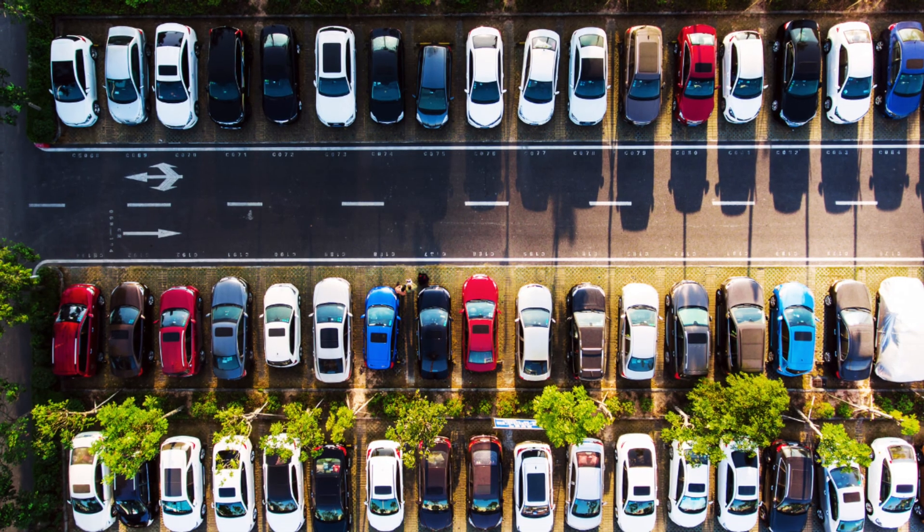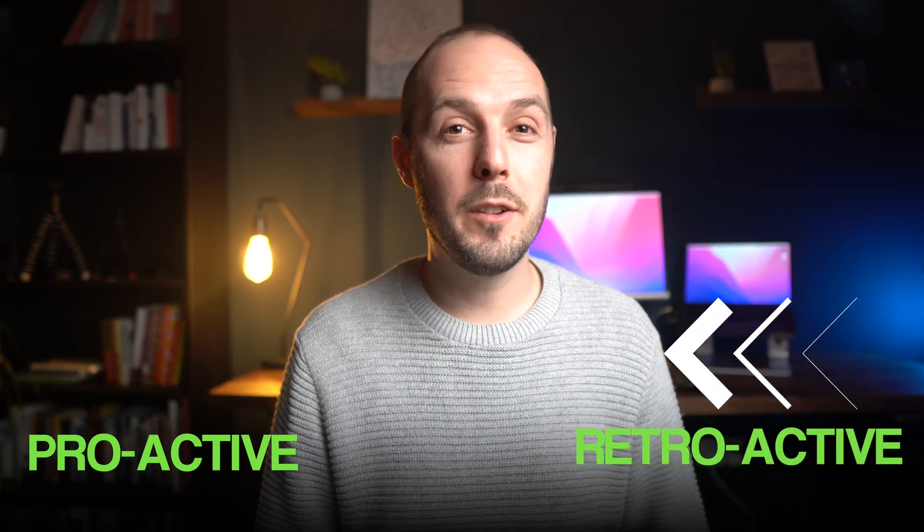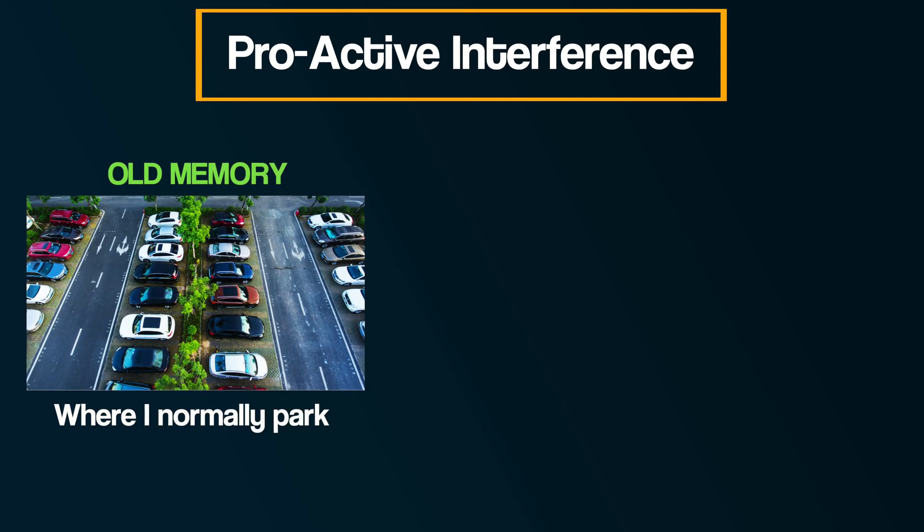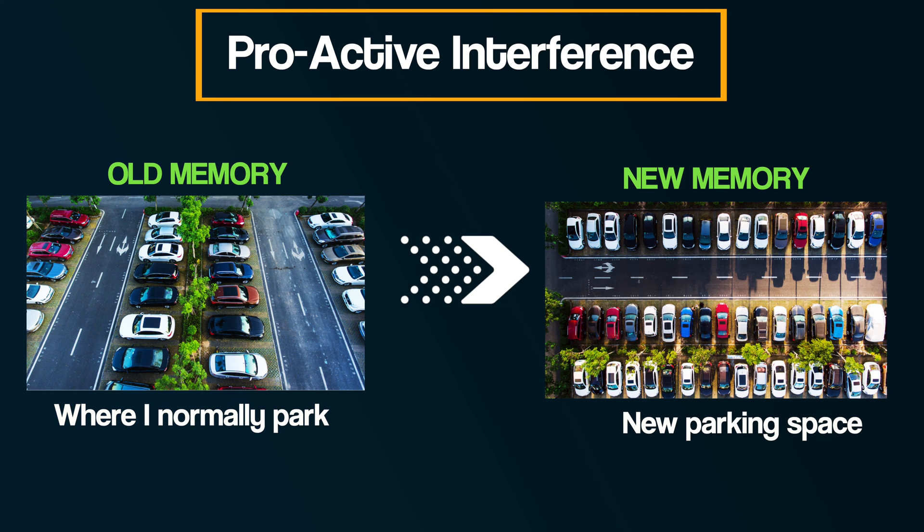For example, when I park my car at work, I tend to park in the same space or part of the car park each day. But one day I arrive and all the spaces in that part are taken, so I have to park further away and use a new space. However, at the end of the day when I go to look for my car, I can't find it — the thought even flashes through my mind that someone's stolen it. But no, I've just forgotten where I parked it. This is an example of proactive interference: the old information from the past of where I normally parked has interfered with my new information of where I parked that day. I'll put a few more examples on the screen for you to practice — you can pause the video and identify whether they are examples of proactive or retroactive interference.